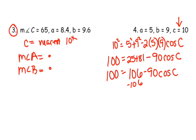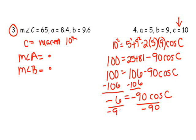So, what you have to do is you have to subtract 106 from both sides. And you get negative 6 over here equals negative 90 cosine C. Then you divide both sides by the thing in front of the cosine.